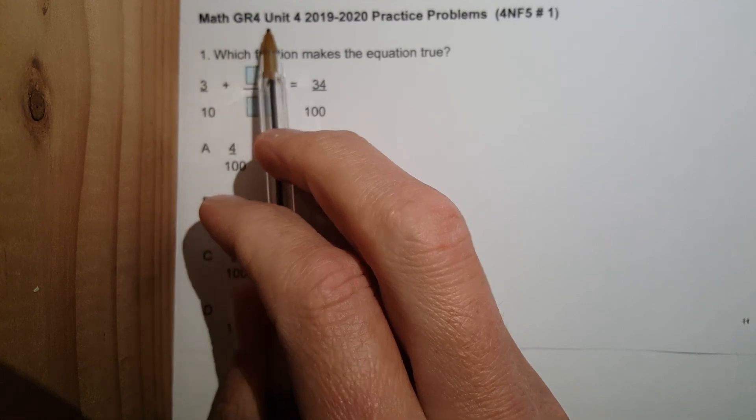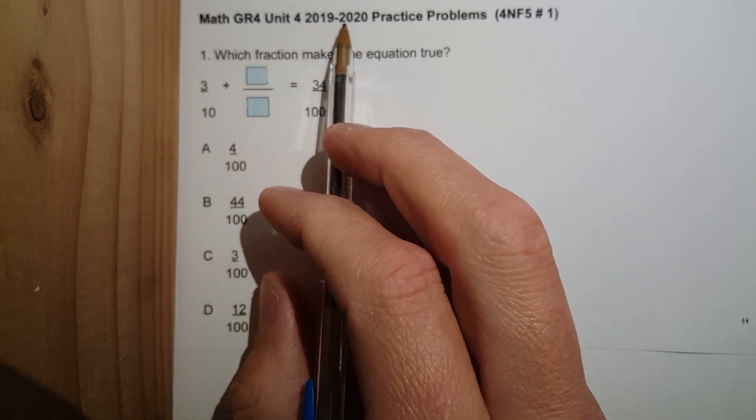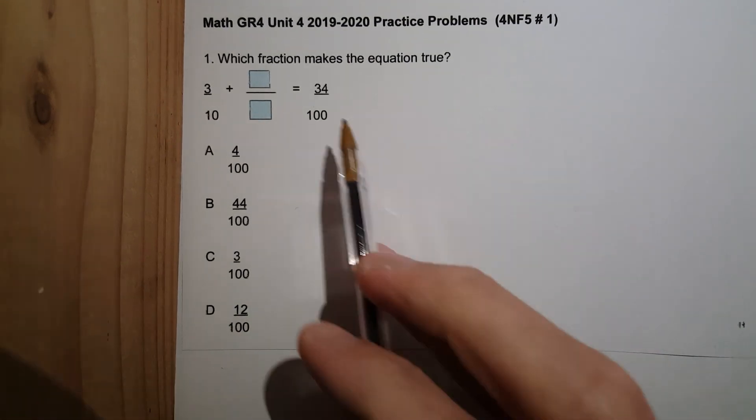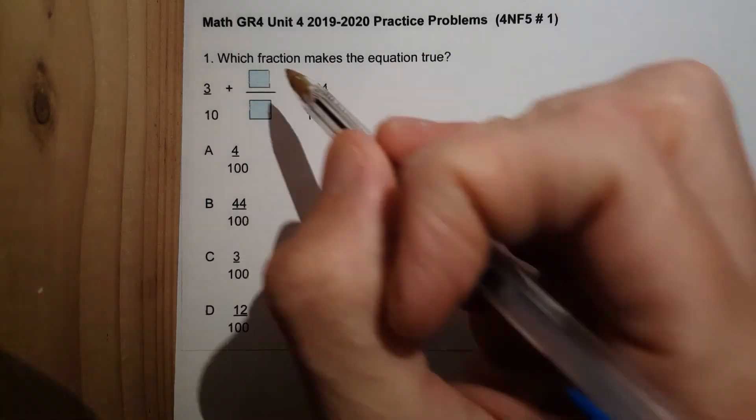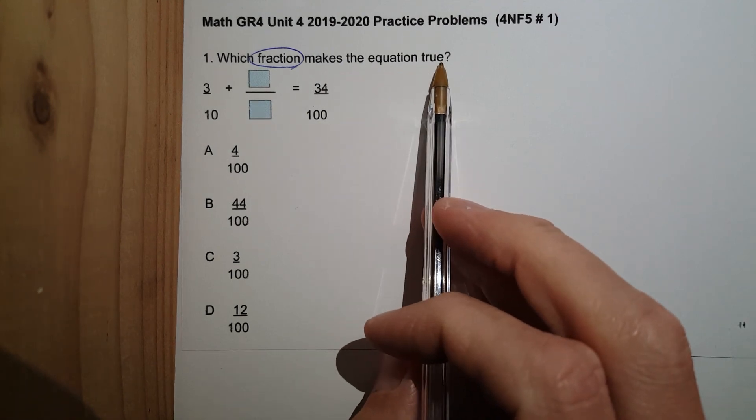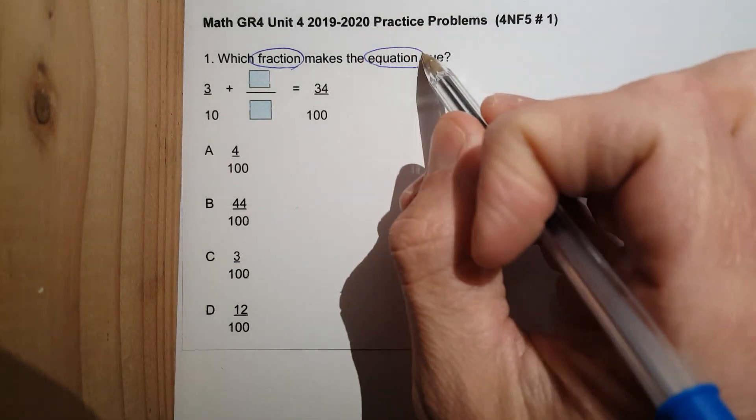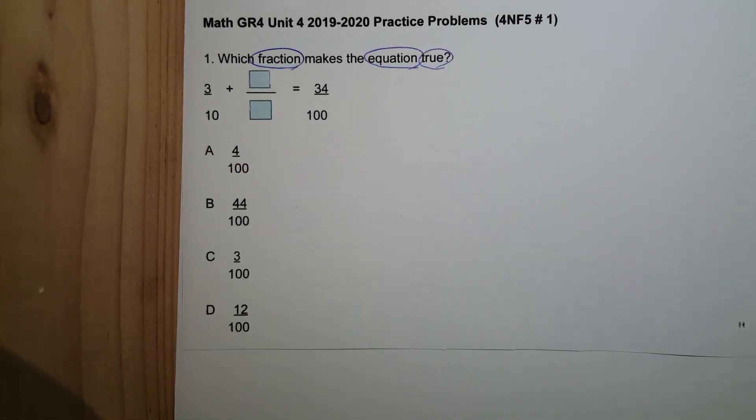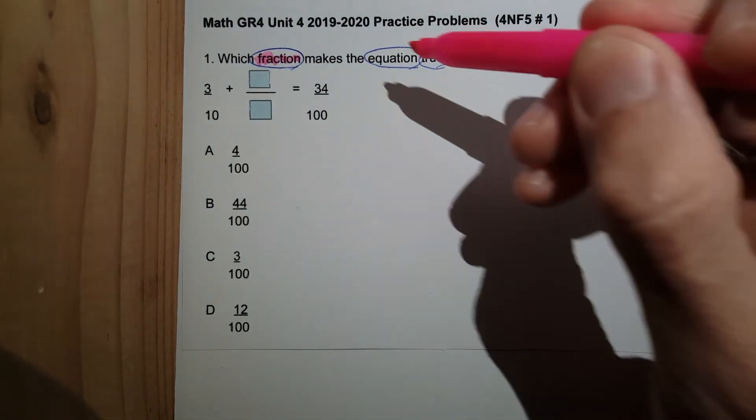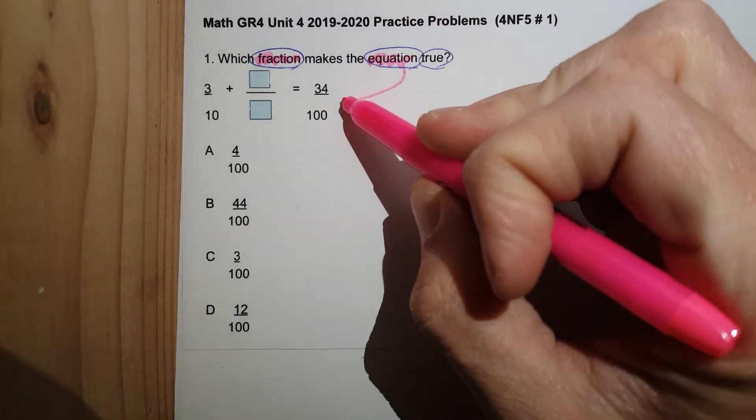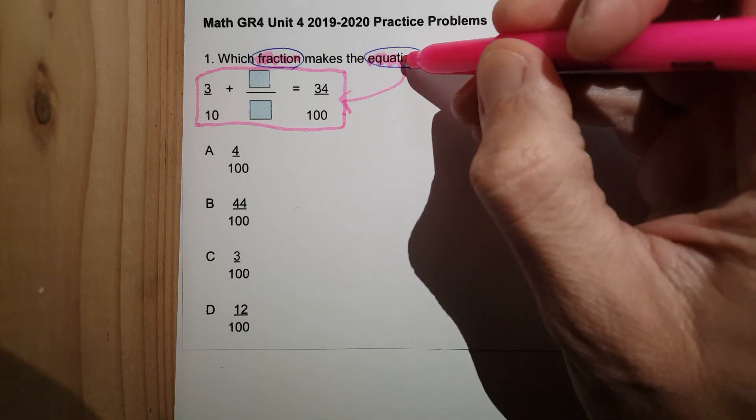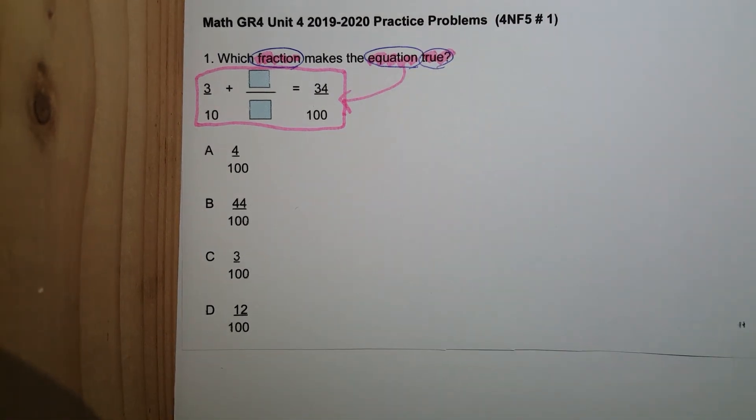Here it is. Math grade four, unit four, 2019-2020 practice problems, 4NF5, number one. Number one, which fraction makes the equation true. Keywords, academic vocab words, last unit, we talked about fractions. So you know what a fraction is by now. Equations. This is an equation and true. It needs to make sense. It needs to work in math.